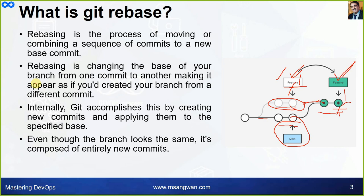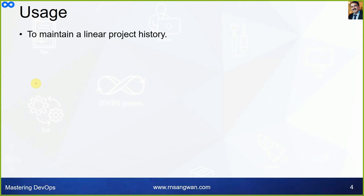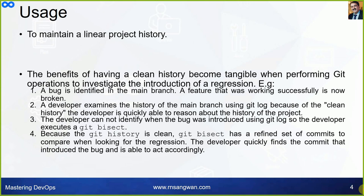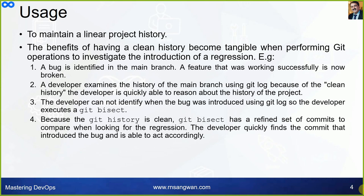Uses — why do we need rebasing, and when do we need it? The use case is to maintain a linear project history. The benefit of having a clean history becomes tangible when performing Git operations to investigate the introduction of a regression. For example, a bug is identified in the main branch — that's a good use case.